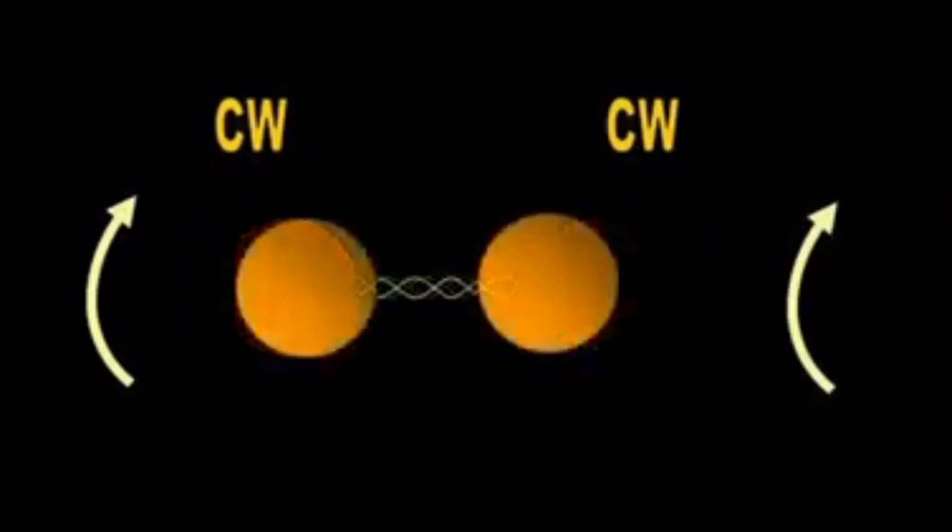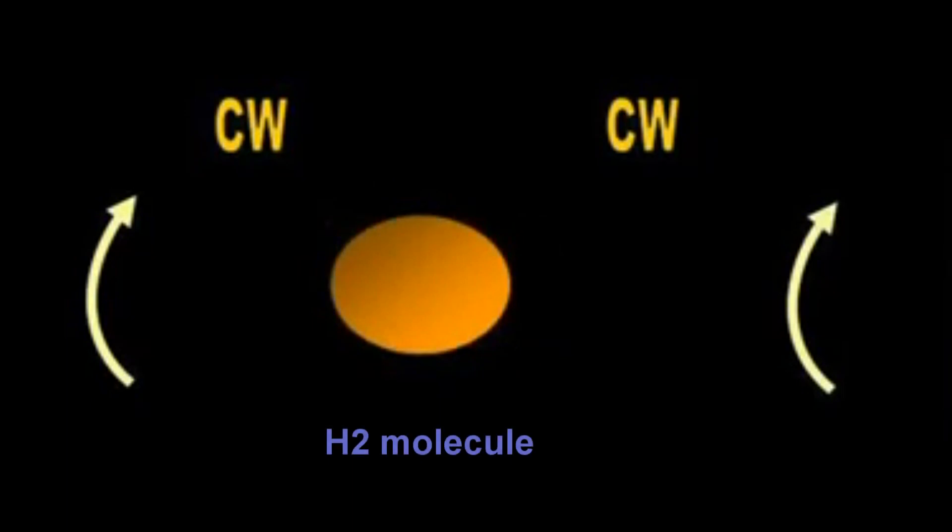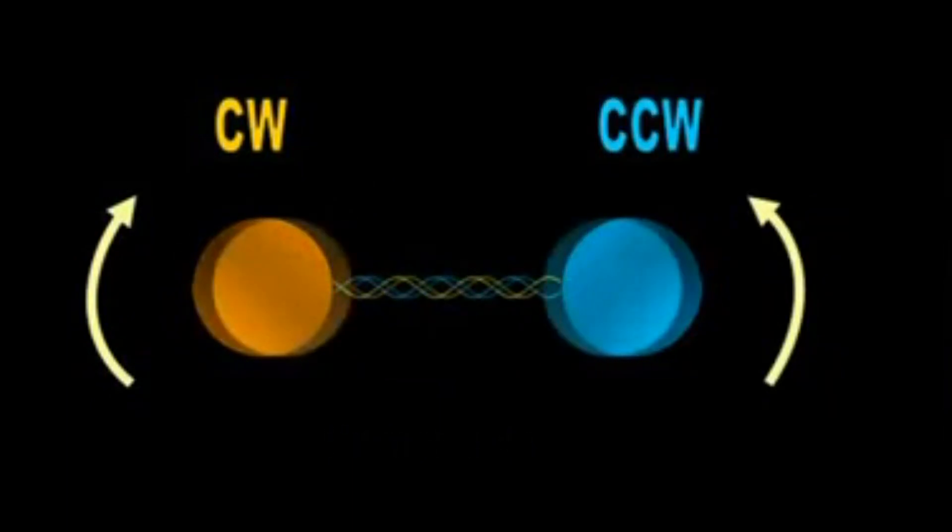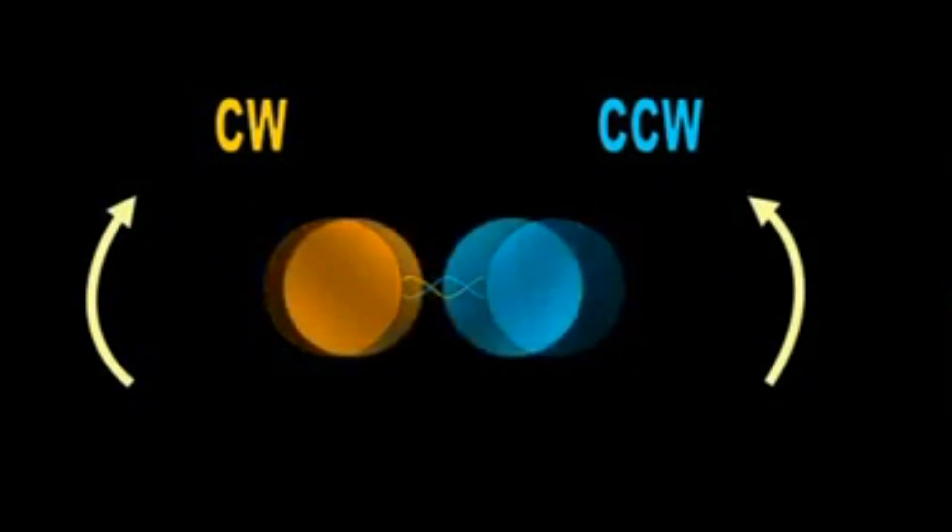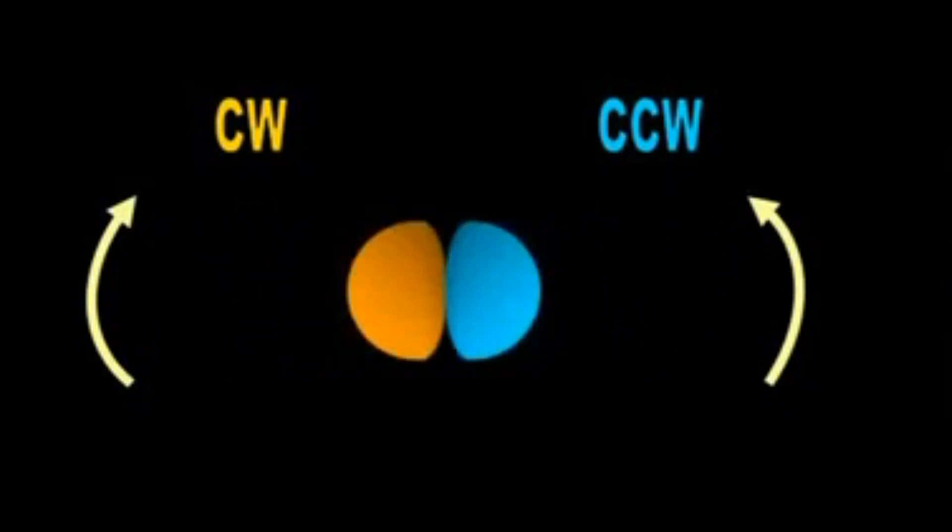For example, if the shells are both spinning clockwise, the atoms screw into each other and form the H2 gas molecule. If instead they spin in opposite directions, the atoms push each other away and the rope between them regenerates itself.